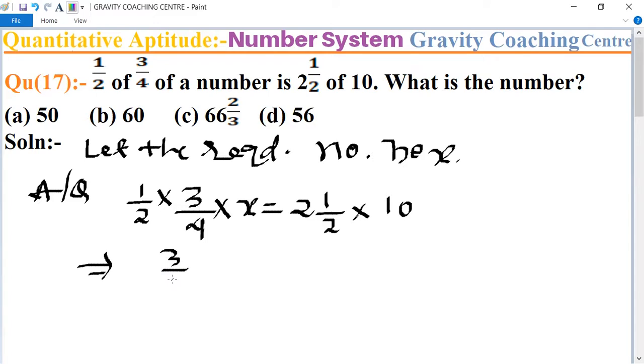This implies that three-eighths x equals five-halves multiplied by 10. So we cancel, the multiple of 5 and 10.